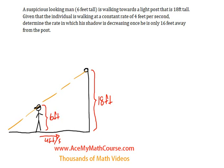So this measures 16 right now, and I'm going to make it a variable and call it x. We want to know how fast his shadow, which is right here, is decreasing. I'm going to call his shadow y, once he is 16 feet away from the post.